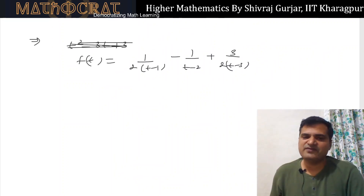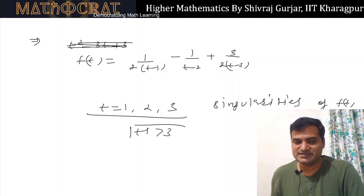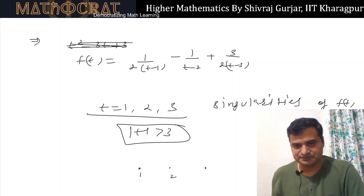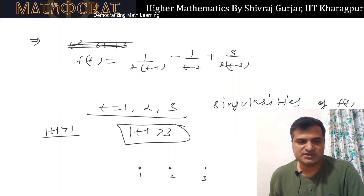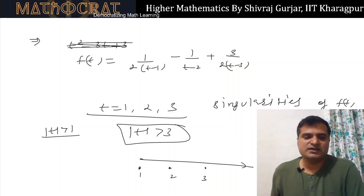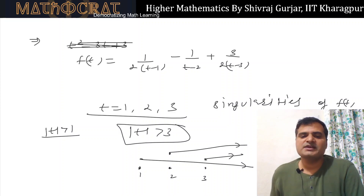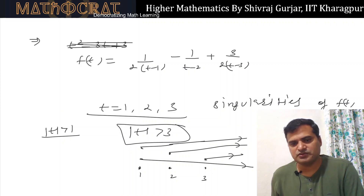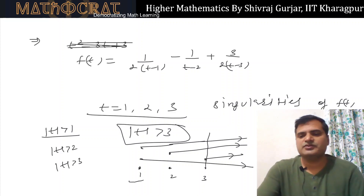The singularities of f(t) are at t = 1, 2, and 3. We are asked for the region |t| > 3. Note: something valid for |t| > 1 is also valid for |t| > 2 and |t| > 3. Something valid for |t| > 2 is valid for |t| > 3. And something valid for |t| > 3 is valid in that region specifically.